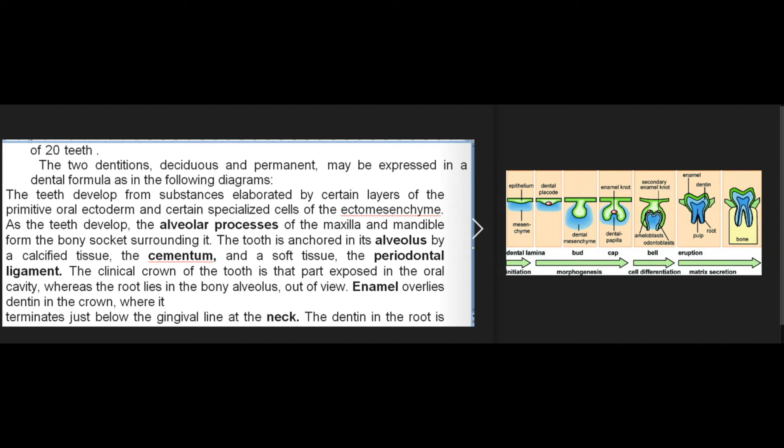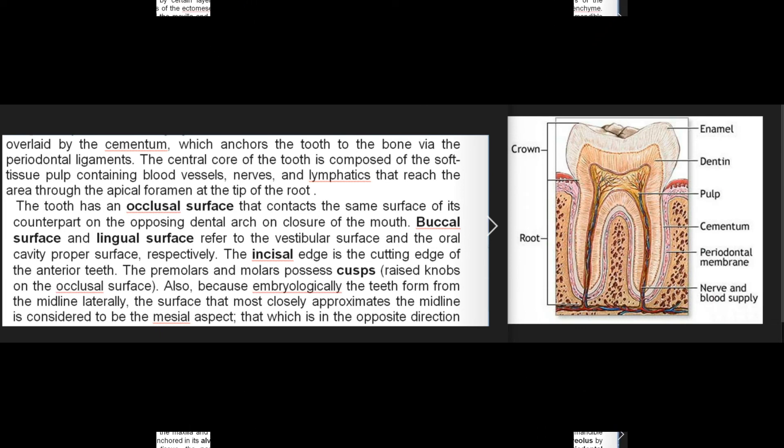Enamel overlies dentin in the crown, where it terminates just below the gingival line at the neck. The dentin in the root is overlaid by the cementum, which anchors the tooth to the bone via the periodontal ligaments. The central core of the tooth is composed of the soft tissue pulp containing blood vessels, nerves, and lymphatics that reach the area through the apical foramen at the tip of the root.